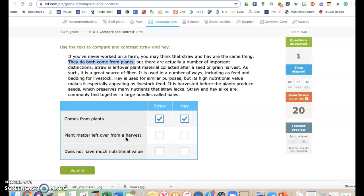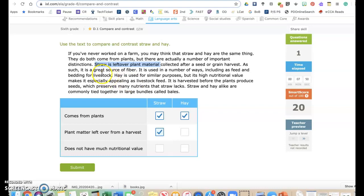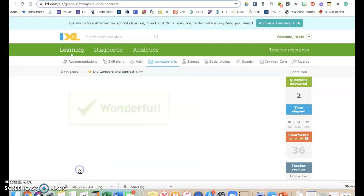Comes from plants. I saw that it says they both come from plants. Okay, so straw and hay both come from plants. Plant matter left over from a harvest. It says here, straw is leftover plant material collected after a seed or grain harvest. So, that's just straw. Does not have much nutritional value. Hay is used for similar purposes, but it's high nutritional value. So, even though it doesn't say that straw does not have nutritional value, I know I can't mark hay, because hay has high nutritional value. So, I'm going to mark straw and hope that I'm right. I was.